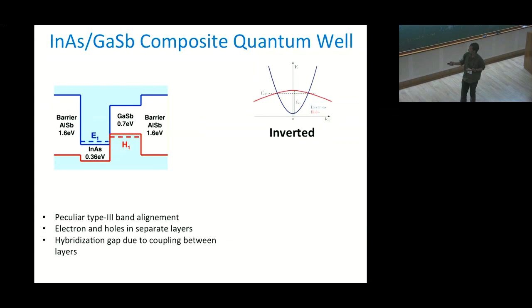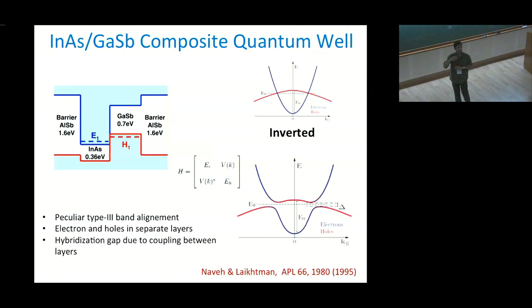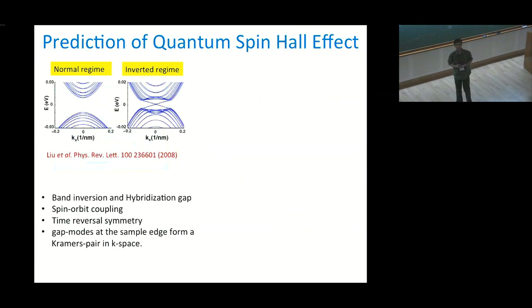If you consider the quantum tunneling between these two layers and the charge transfer, there is a formation of a hybridized, small hybridization gap of around 5 to 10 meV. You can describe this using a two-band Hamiltonian, where E_electron and E_hole are the electron and hole energies, and the off-diagonal term determines the tunneling. This tunneling gives rise to bonding and anti-bonding kind of states.